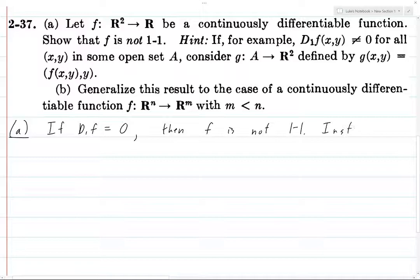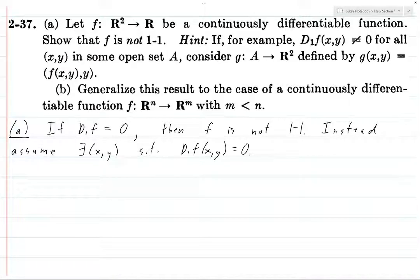Okay, so instead assume that there exists some point (x,y) such that d₁f(x,y) is not equal to 0. And so here is sort of the first thing that I'm not entirely sure about with this problem. The hint says to suppose that d₁f(x,y) is non-zero for all (x,y) in some open set A, but what we're going to do is apply the inverse function theorem at (x,y) and we will only need d₁f(x,y) to be non-zero.